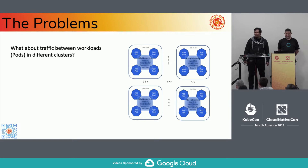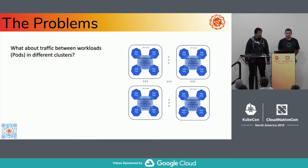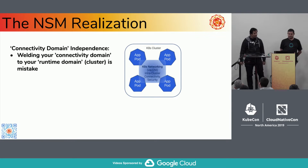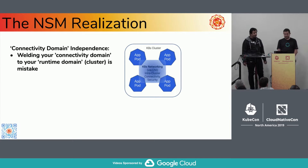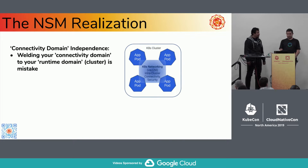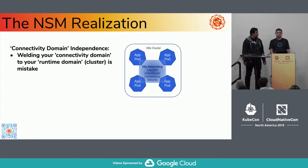The problem with this is Kubernetes networking is great if you're within a single cluster. If you have microservices that have to go east-west, if you have databases that need to be available across multiple clusters, now you've got a problem — you have this really cool connectivity domain within a cluster, intra-cluster, but there's no one good simple solution for running between connectivity domains. This is where a really central realization came to us: why are we welding our connectivity domains to our runtime domains?